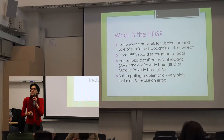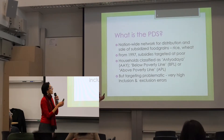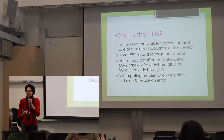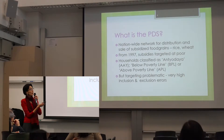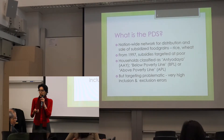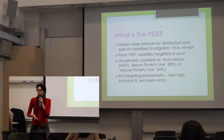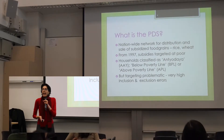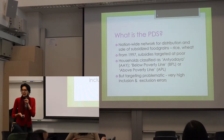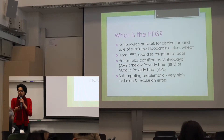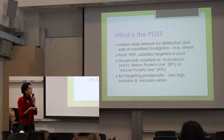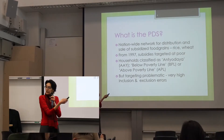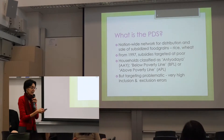Ostensibly, the AAY and BPL households should get the maximum subsidies, and the above poverty line households pay market prices for the grain. However, the targeting is very problematic and several studies have shown there are large inclusion and exclusion errors. Many poor households don't have BPL or AAY cards, and conversely, there are rich households which have these cards.